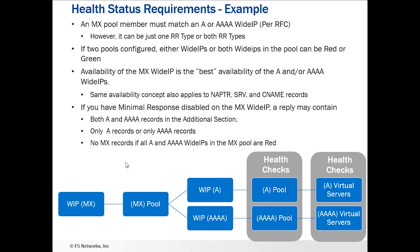If two pools are configured, either wide IP or both wide IPs in the pool can be red or green — their pool statuses are independent of each other. You can get into scenarios where one is available and the other is not. The availability of the wide IP fronting both of these pools is the best availability of all pools associated with that wide IP.